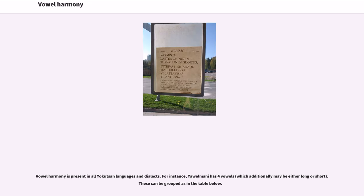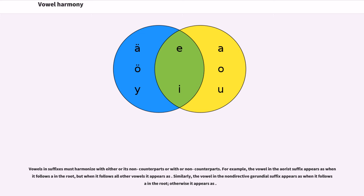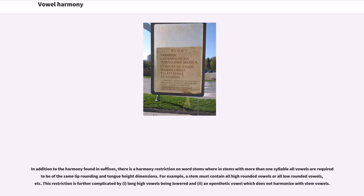Vowel harmony is present in all Yokuts languages and dialects. For instance, Yawelmani has four vowels, which can be grouped into harmonic sets. Vowels and suffixes must harmonize with either their counterparts or non-counterparts. For example, the vowel in the aorist suffix appears as one form when it follows a in the root, but another when it follows all other vowels. There is also a harmony restriction on word stems wherein, in stems with more than one syllable, all vowels are required to be of the same lip rounding and tongue height dimensions. This restriction is further complicated by long high vowels being lowered by an epenthetic vowel which does not harmonize with stem vowels.